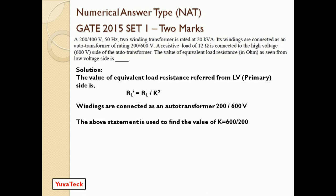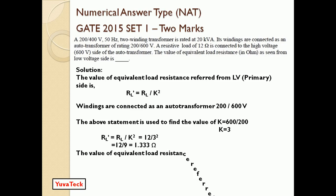The windings are connected as an auto transformer. The above statement is used to find RL/K². You should not use the first rating value directly; you should use the transformation ratio calculated from the auto transformer connection of 200/600. K is equal to 600/200 — secondary voltage divided by primary voltage, V2 by V1 — so K equals 3. Therefore RL' = RL/K² = 12 divided by 3 squared = 12 divided by 9 = 1.3333 ohms.